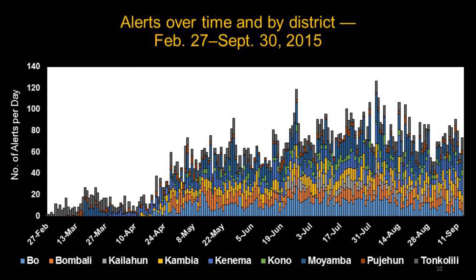Looking at the results: this graph shows the number of alerts over time. Since community event-based surveillance began operations on February 27th until the end of the study period on September 30th, 2015, the system generated over 12,000 alerts. By the end of April, eight of the nine districts were online, and by mid-June all nine districts were reporting an average of 79 alerts per day.